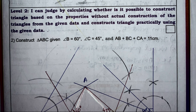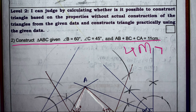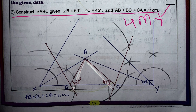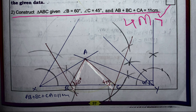This next question is very important — it will be asked in the examination for four marks. This question appeared in the model question paper for the ninth standard, so listen carefully. Construct triangle ABC where angle B = 60°, angle C = 45°, and AB + BC + CA = 11 cm.